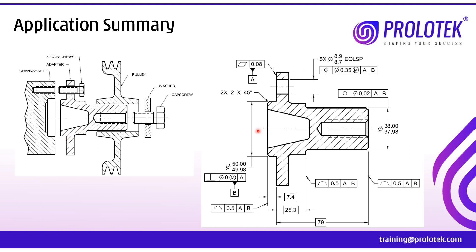When assembling this adapter onto the crankshaft, there are two contact surfaces: the diameter entering the counter bore on the crankshaft, and the face of the adapter butting against the crankshaft face. These two surfaces come in contact with the mating part. Based on the assembly, this diameter and this face are the two features important for assembling with the crankshaft.